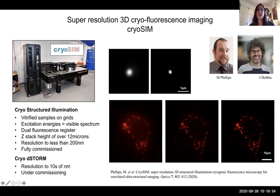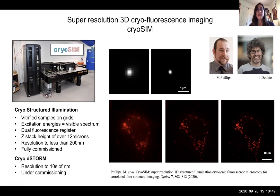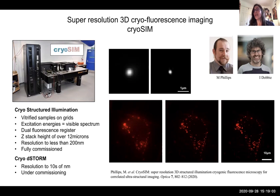I'm showing here the fluorescence of a single 175 nanometer fluorescent bead and the improvement you get with cryoSIM, to give people a feeling of how much better things look. I've also included a strip from our recent publication in Optica, where you can see the improvement in resolution from widefield all the way to super resolution. What you're seeing here is fluorescent localization in vesicles in a mammalian cell that has been infected by a virus, where these vesicles have been ruptured, allowing a red fluorophore to localize inside them.